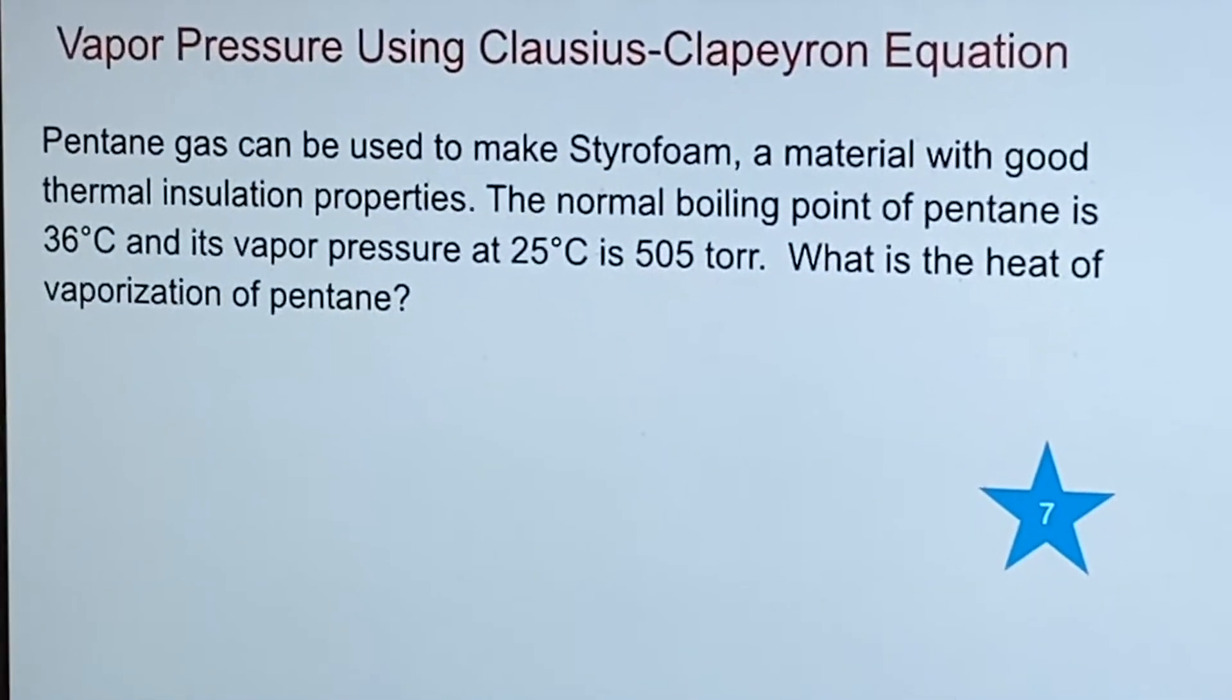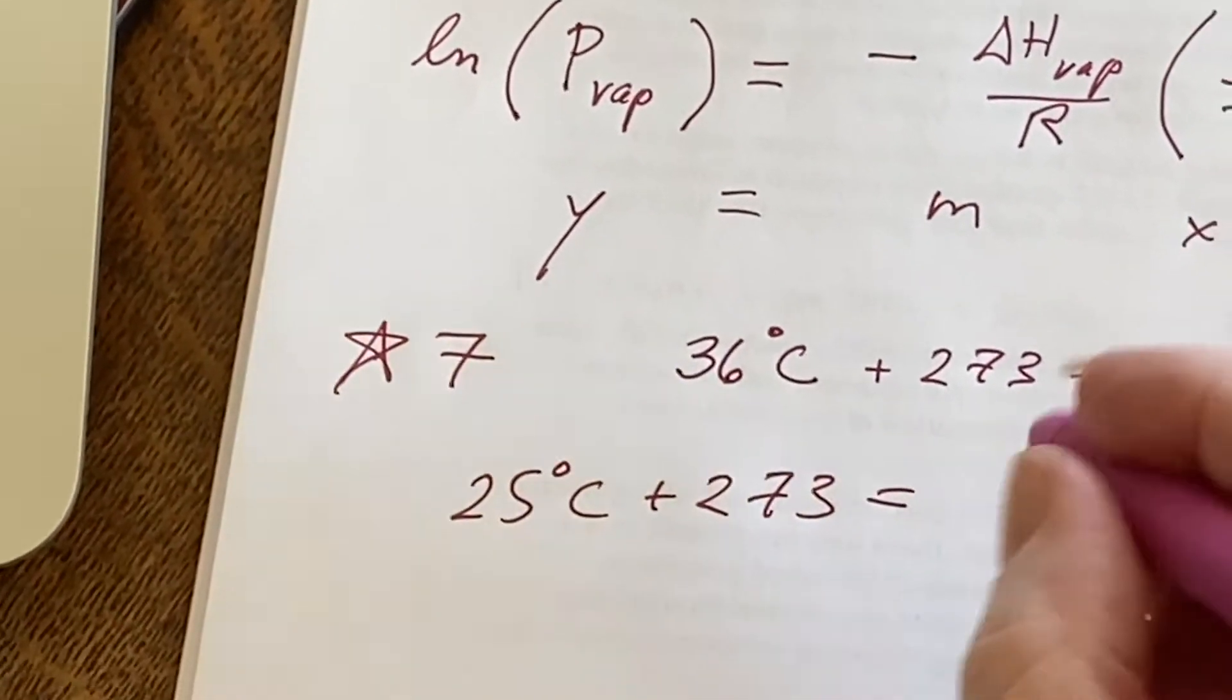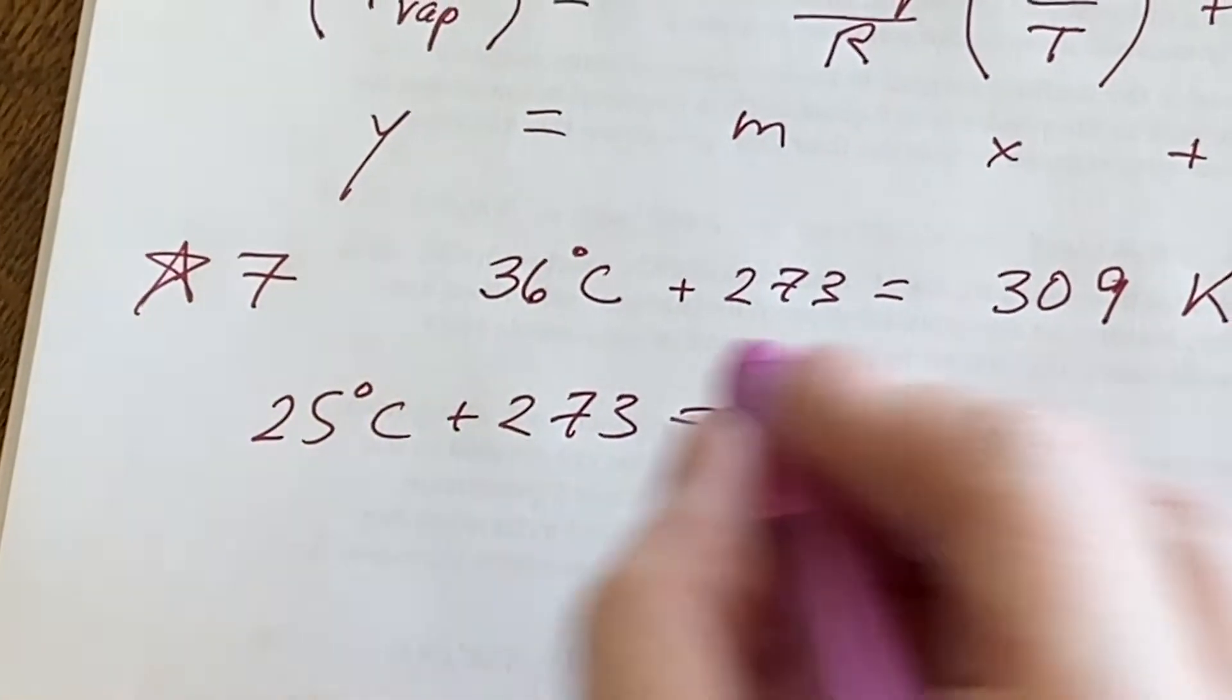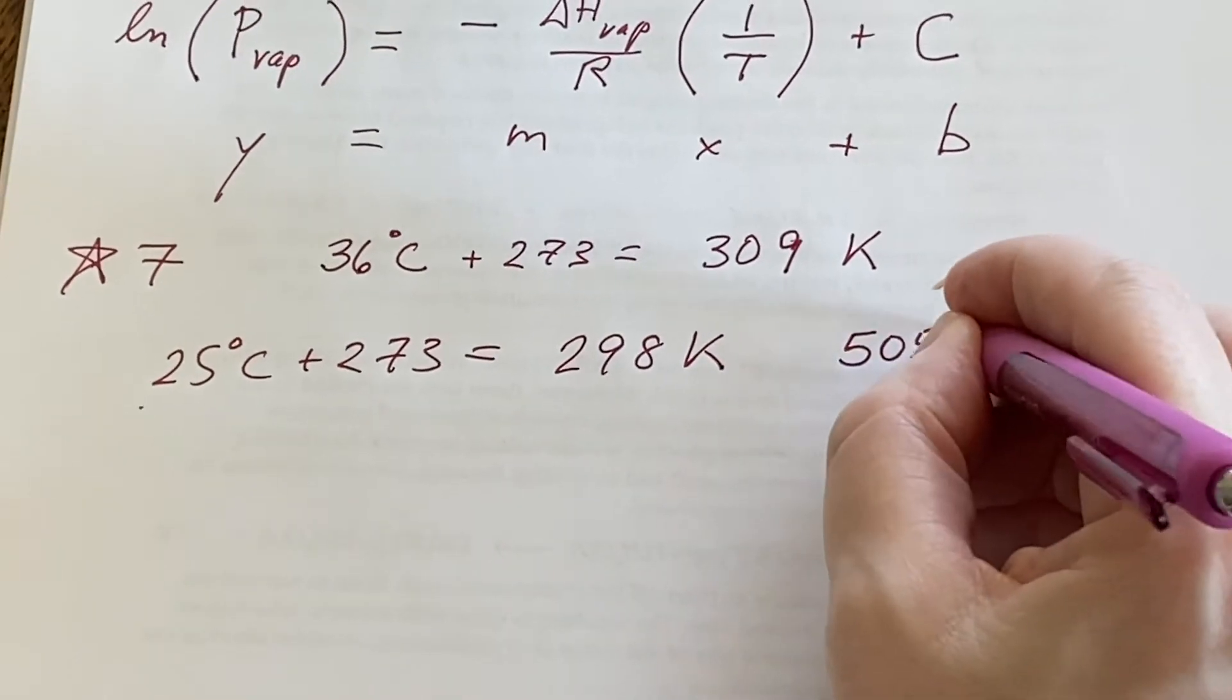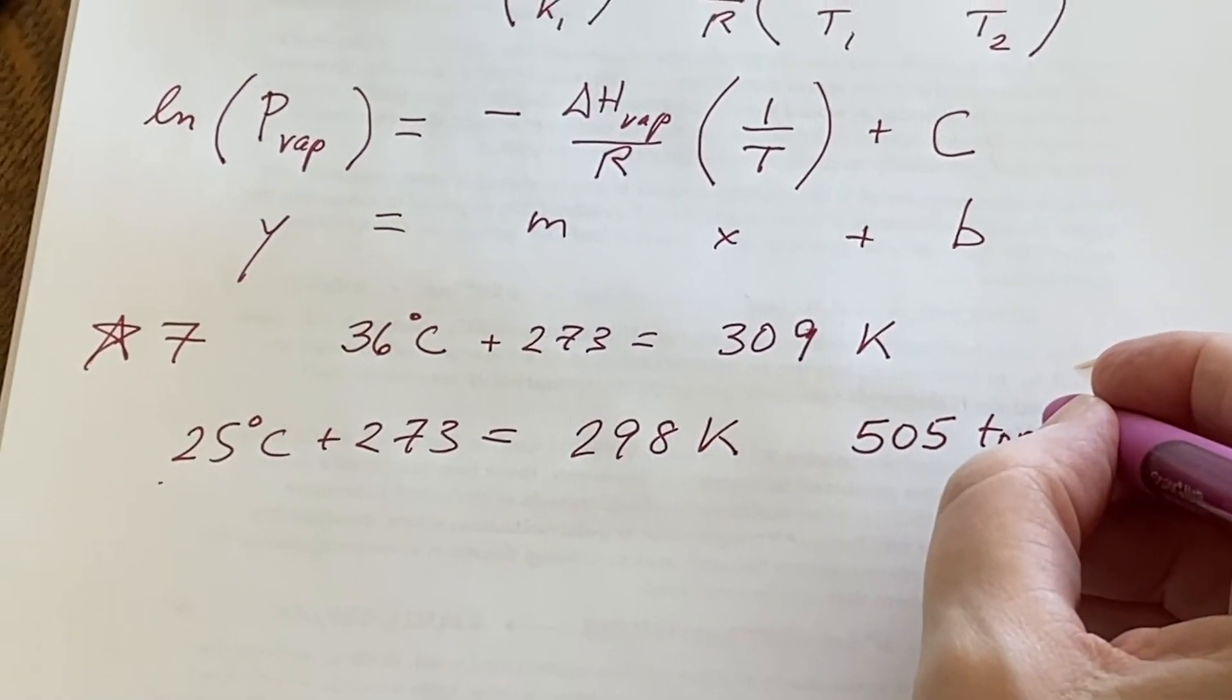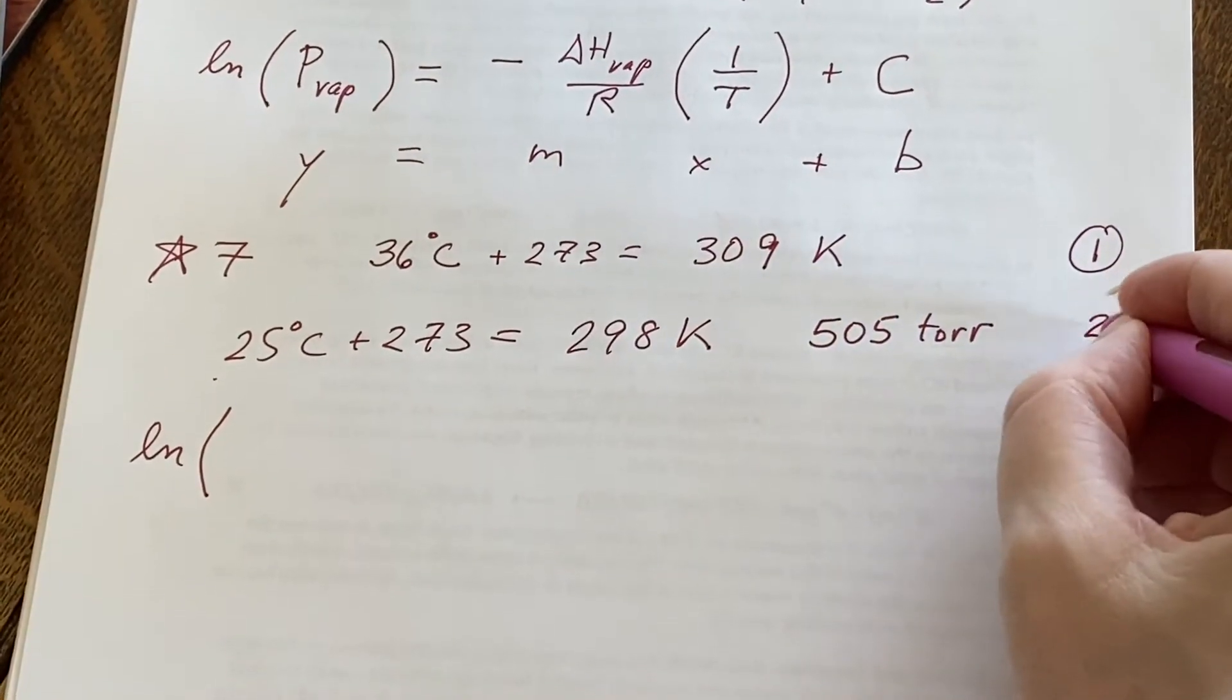Its vapor pressure at 25 degrees Celsius - I better take that, 25 degrees Celsius, turn that into Kelvin, and that's going to be 298 Kelvin. And they said at this one, its pressure is 505 Torr. Then they asked, what is the heat of vaporization of pentane? We'll call this case one and this case two.